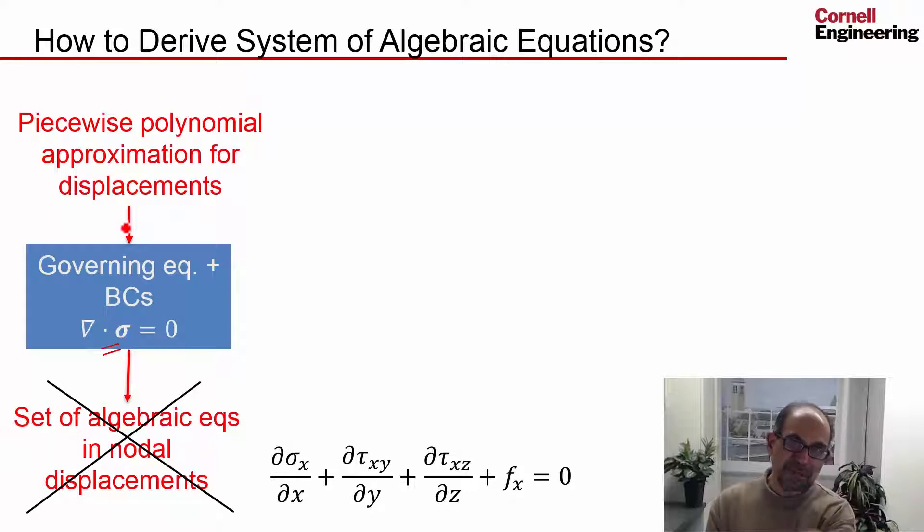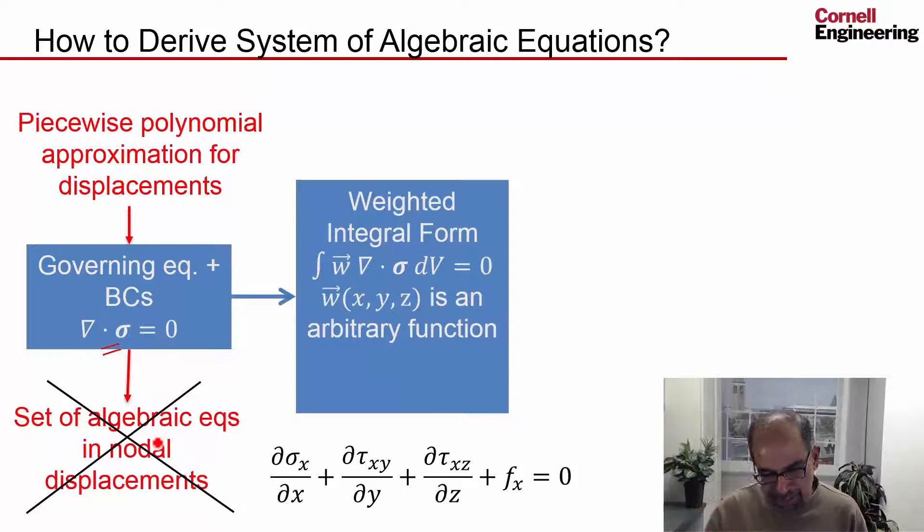If you take the piecewise polynomial approximation, the element by element polynomial approximation, and you plug it in here, you won't get the set of algebraic equations analogous to what we saw in the big ideas in FEA. So you have to go to a weighted integral form. That's a clever way to do it.